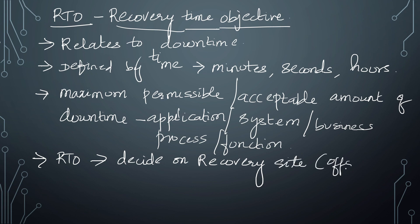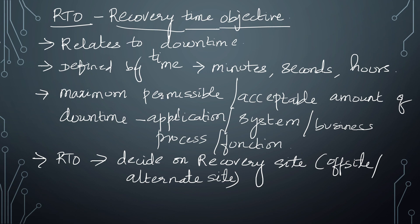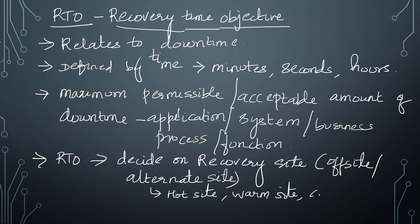Based on the RTO, you decide on the recovery or alternate site. The alternate site is the site other than your original site where you continue operations in the case of a disaster. When the original data center is affected by a disaster, you continue operations at the alternate or backup site for a limited time. There are three types of alternate sites: hot site, warm site, or cold site.